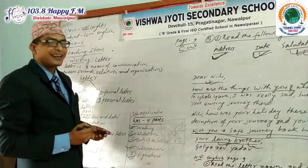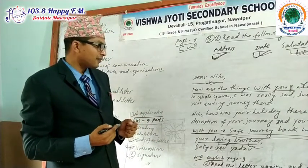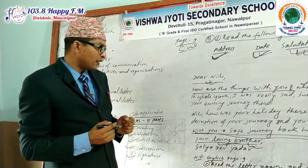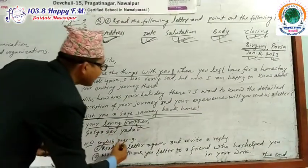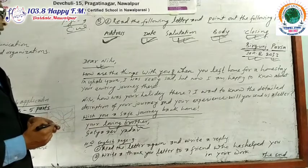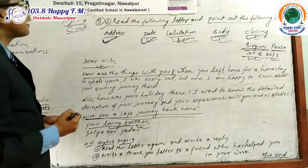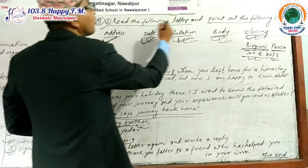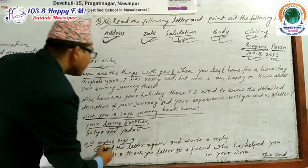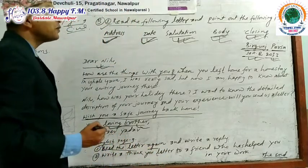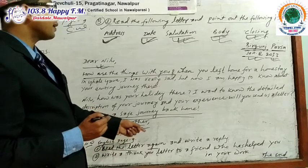Now you know very well about the letter because we have discussed it in detail today. As homework, which is mentioned in your textbook page number 9, Compulsory English: first, read the following letter and point out the following parts. Second, read the letter again — meaning the letter written by Satya Dev — and write a reply.